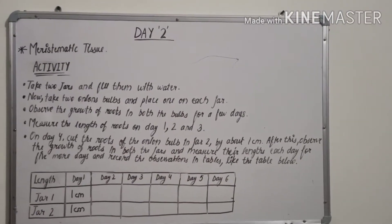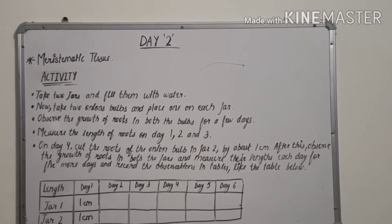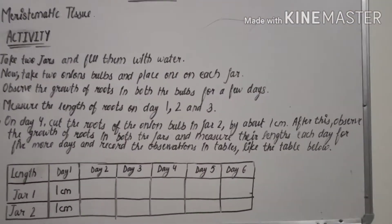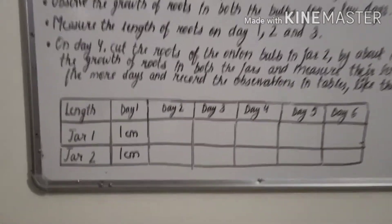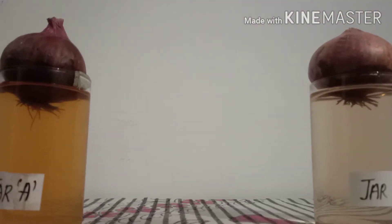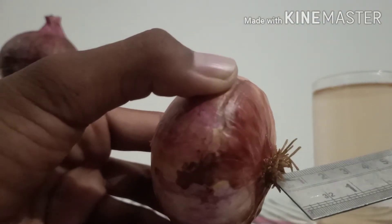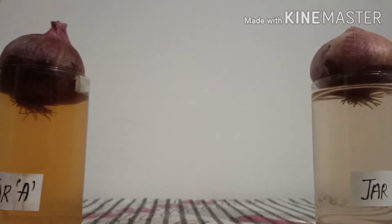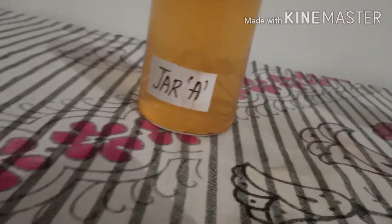The third step is to observe the growth of roots in both the bulbs for a few days. The fourth step is to measure the length of roots on day one, two, and three. This is day two. The day one result was one centimeter and one centimeter. Now measuring — it's 1.5 centimeters for the first onion and also 1.5 centimeters for the second. Both onions are the same in jar one and jar two.